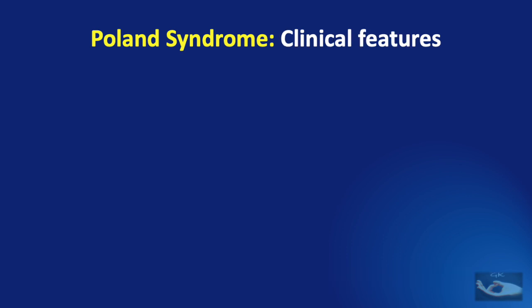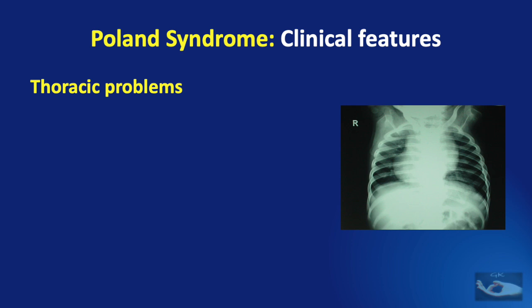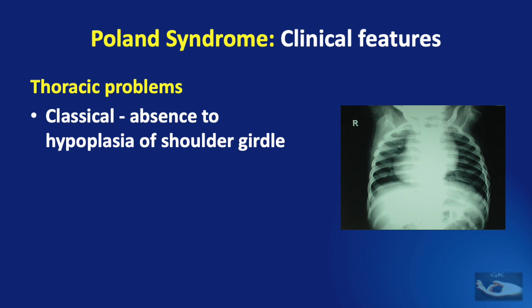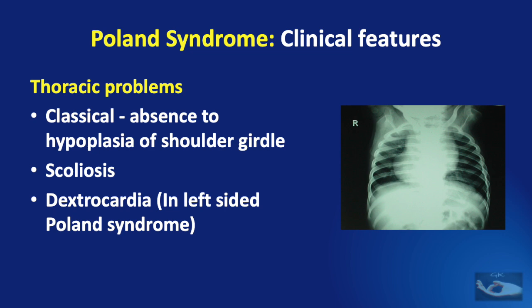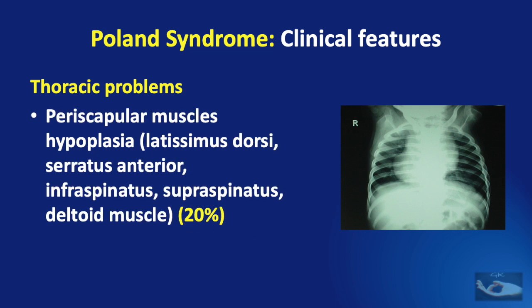The clinical features of Poland syndrome can be studied under thoracic problems, upper limb problems, and other miscellaneous problems. Among the thoracic problems, the classical finding is either absence or hypoplasia of the shoulder girdle, scoliosis, and dextrocardia if it is left-sided Poland syndrome. In 40 percent there may be unilateral nipple hypoplasia or agenesis, breast hypoplasia or agenesis in 20 percent, and thoracic wall anomalies in 30 percent. In 20 percent of cases, periscapular muscles such as the latissimus dorsi, serratus anterior, infraspinatus, supraspinatus, and deltoid muscles can be hypoplastic.